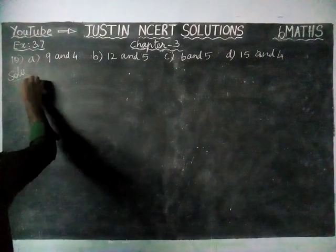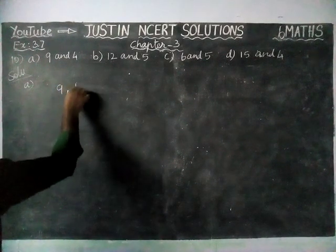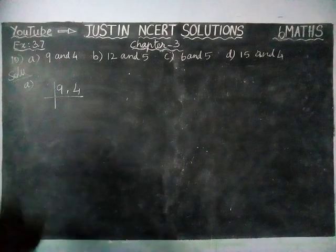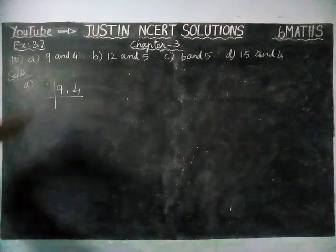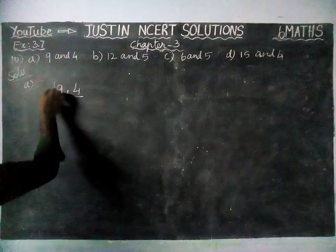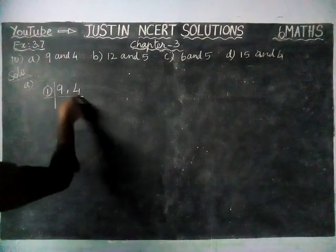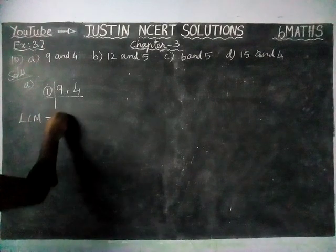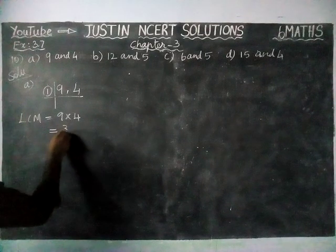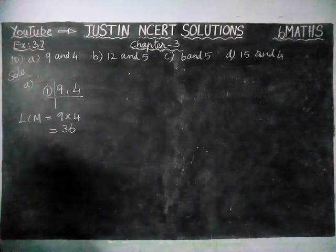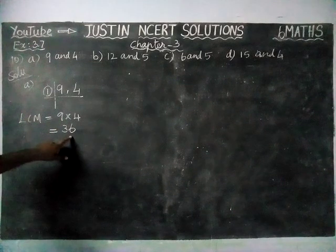Firstly, we are going to take part A: 9 and 4. Here, 9 and 4 don't have any common divisor. We don't have any other common factor except 1. So, we can multiply these two numbers. LCM is equal to 9 × 4 = 36. LCM of 9 and 4 is equal to 36.